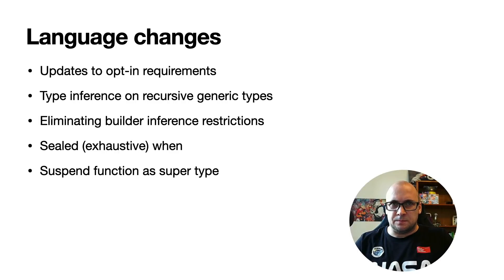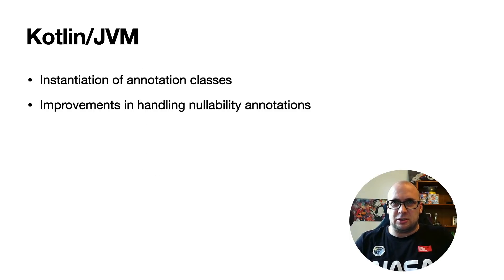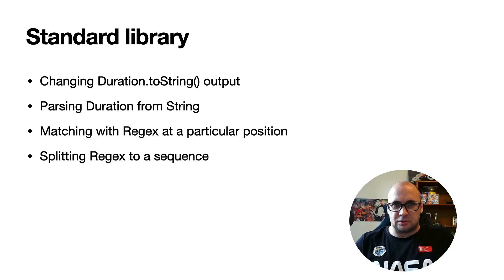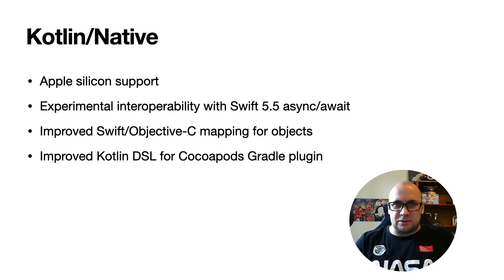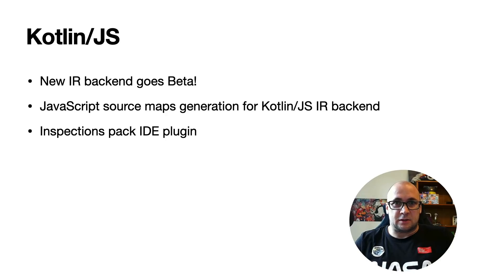There are a few changes to the language. Specifically, there are changes in how opt-in requirements work, updates in the area of type inference, we are adding the exhaustive behavior to the when statement, and there is now a possibility to use suspend functions as supertype. For the JVM target, it is now possible to instantiate annotation classes and there are improvements in handling nullability annotations. We also added experimental functions in the standard library, updates to the experimental duration API, and new functions in the regex API. There are also interesting updates in Kotlin Native: we added support for Apple Silicon and are improving interoperability with Swift and Objective-C. Kotlin/JS IR backend is promoted to beta.